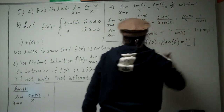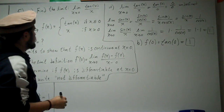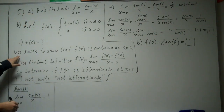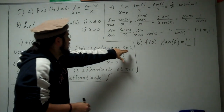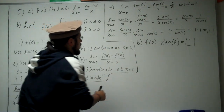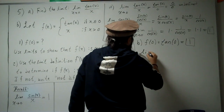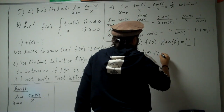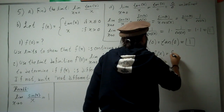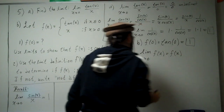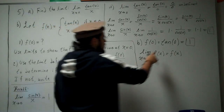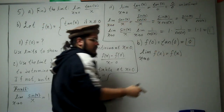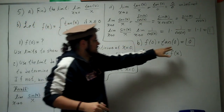Tangent of 0 — that's sine over cosine, and sine of 0 is 0 — so tangent of 0 is 0. Therefore f(0) = 0.